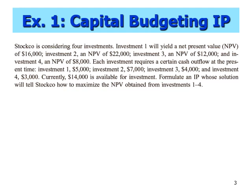Let's take a look at the first example. There are four investments that we may choose, and each investment will give us a return represented by its net present value or NPV. If we would like to invest, we need to put some cash into that investment. At time present, we have $14,000 available for investment, and we are asked to find the solution that maximizes the NPV obtained from investments 1 to 4.